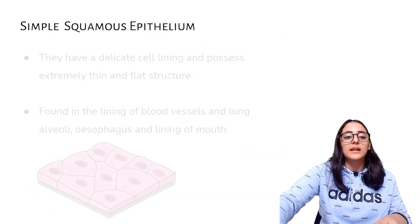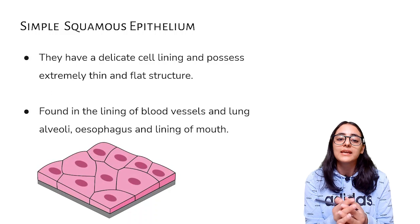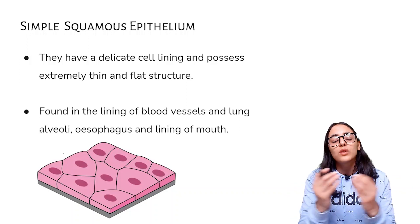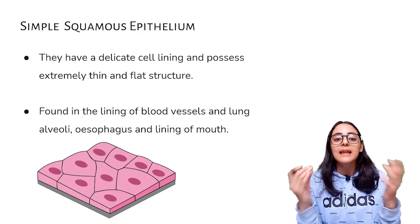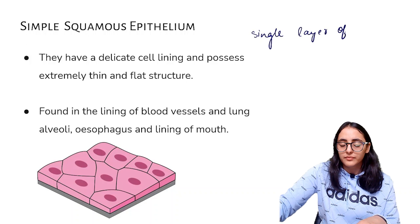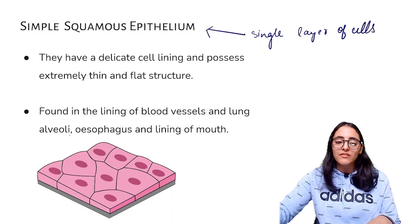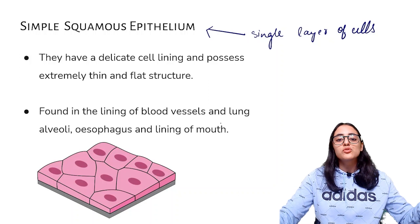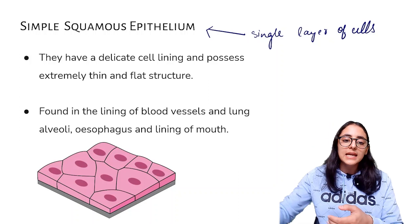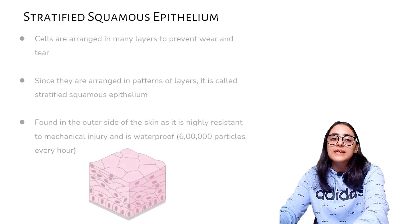Simple squamous epithelium has a delicate cell lining with an extremely thin and flat structure. When there is a single layer of flat cells, it forms simple squamous epithelium. It is found in the lining of blood vessels, lung alveoli, esophagus, and the lining of the mouth.